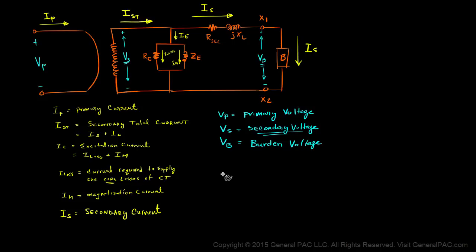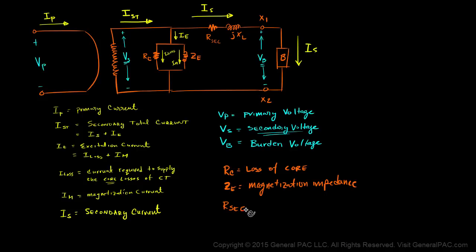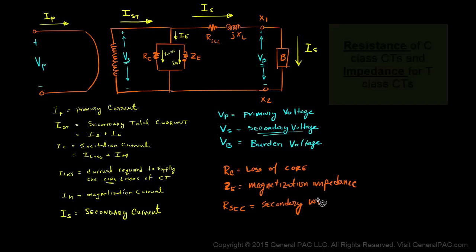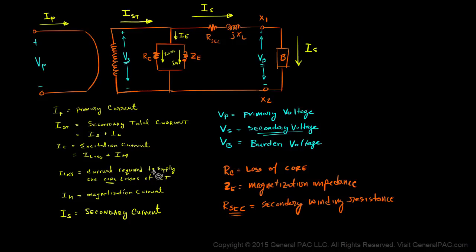Let's now move on to our impedances. RC is a resistor required to model the losses of the core. ZE is the magnetization impedance — this is the impedance that changes with respect to the secondary flux of the transformer. R-secondary is the resistance of the coil per turn; each turn has a resistance associated to it, and R-secondary models the secondary winding resistance. This value will change based on the number of turns on the secondary side. JXL is the leakage reactance — that's the small amount of flux that will not pass through the secondary winding, meaning the flux not actually reaching the core.